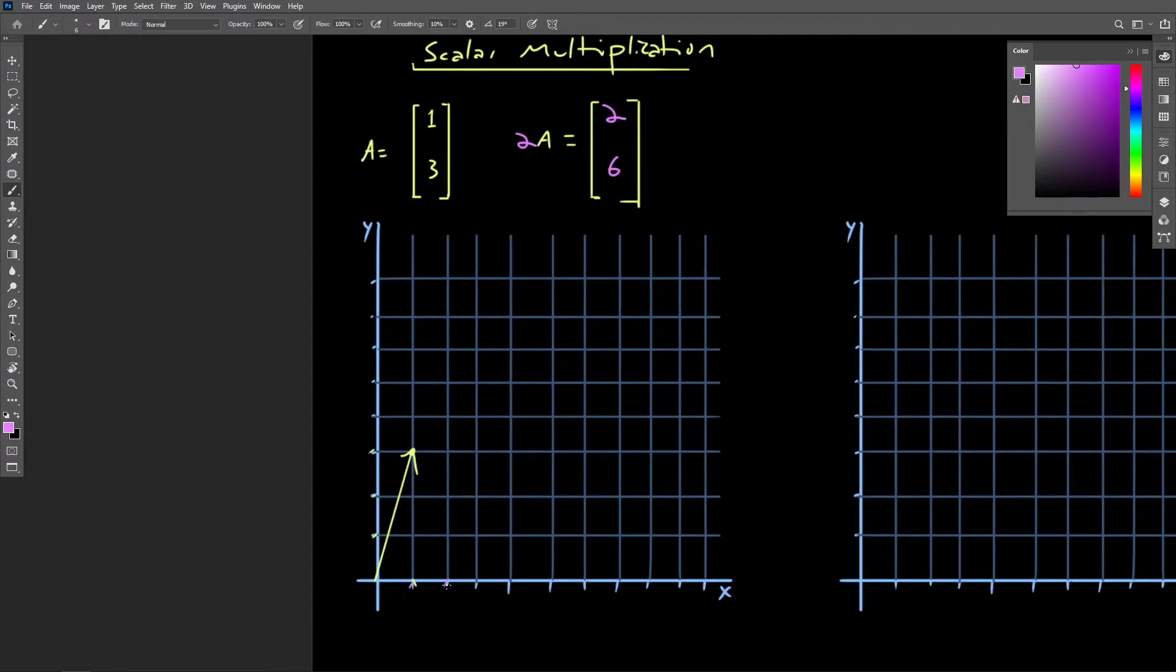And we're going to see here that by drawing this new vector on our graph, we're going to see that the direction remains identical. However, the vector is now twice as long, or its magnitude has increased by a factor of 2.